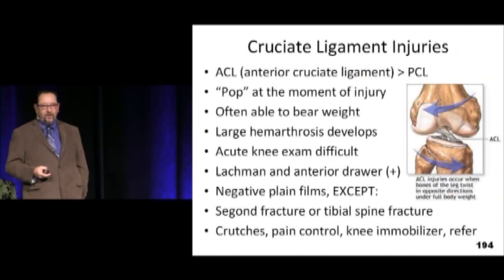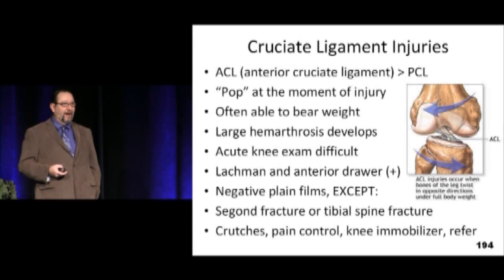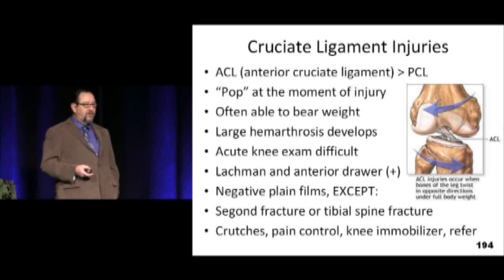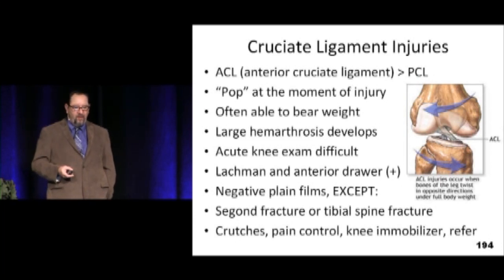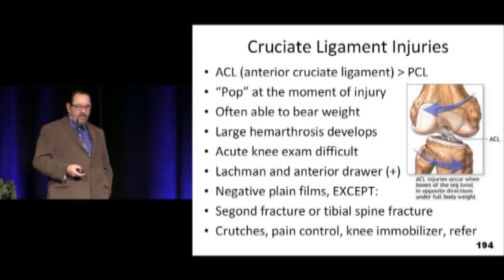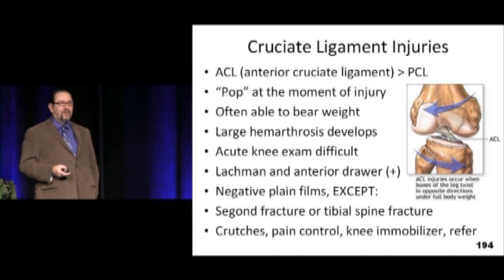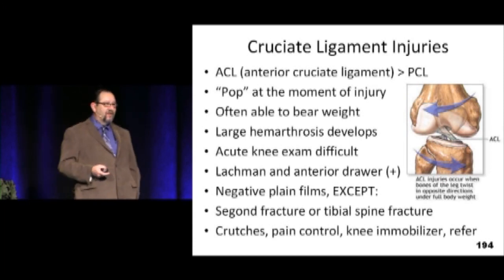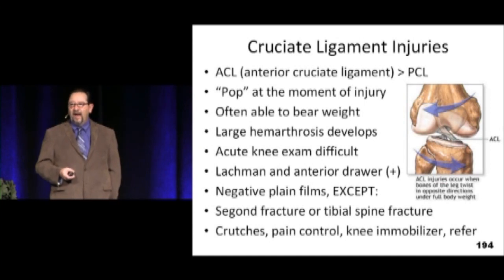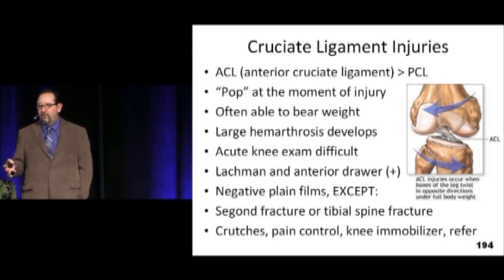Cruciate ligaments are really important. The anterior cruciate is far more commonly injured than the posterior cruciate. Many times a patient will report a pop — they're able to bear weight, sometimes keep skiing or skating for a bit, then develop a huge hemarthrosis over the next 6 to 12 hours. The exam will be very difficult as they involuntarily guard with all the large muscle groups of their thigh. They may have a positive Lachman's and anterior drawer test. These injuries almost never happen in isolation — if the ACL is out, the chances of a partial collateral ligament injury or meniscal tear is very high. One large study found they averaged 2.1 injuries per knee.